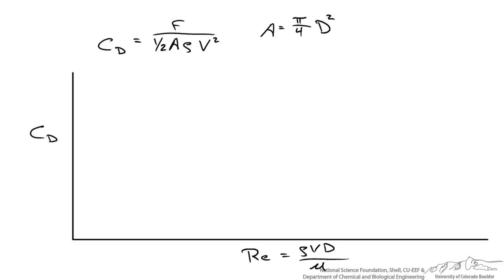If you run a whole bunch of experiments, measuring the force of drag for a particular diameter, cross-sectional area, fluid density, and velocity, you can calculate the coefficient of drag. And knowing density, velocity, diameter, and viscosity, you also calculate the Reynolds number. When you graph coefficient of drag versus Reynolds number for a sphere, you observe a decrease in the coefficient of drag, then an independent region where it doesn't change much, then a decrease due to changes in fluid flow behavior around the sphere, and then an increase again.